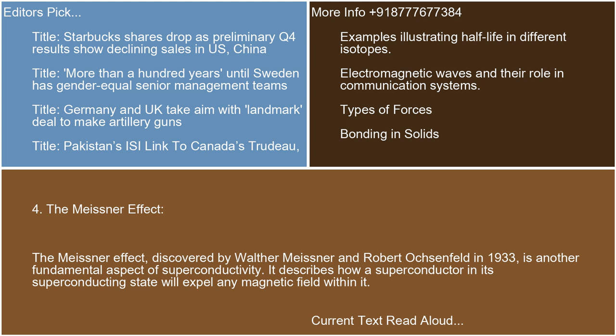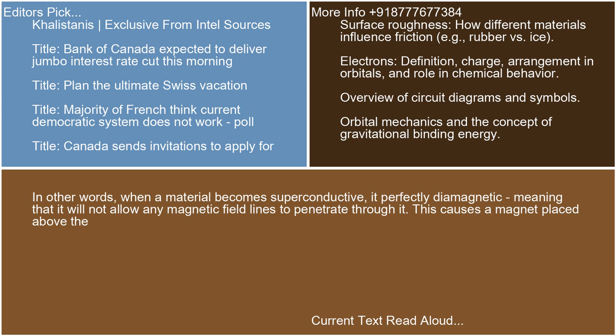The Meissner Effect, discovered by Walter Meissner and Robert Ochsenfeld in 1933, is another fundamental aspect of superconductivity. It describes how a superconductor in its superconducting state will expel any magnetic field within it. In other words, when a material becomes superconductive, it becomes perfectly diamagnetic, meaning that it will not allow any magnetic field lines to penetrate through it. This causes a magnet placed above the...